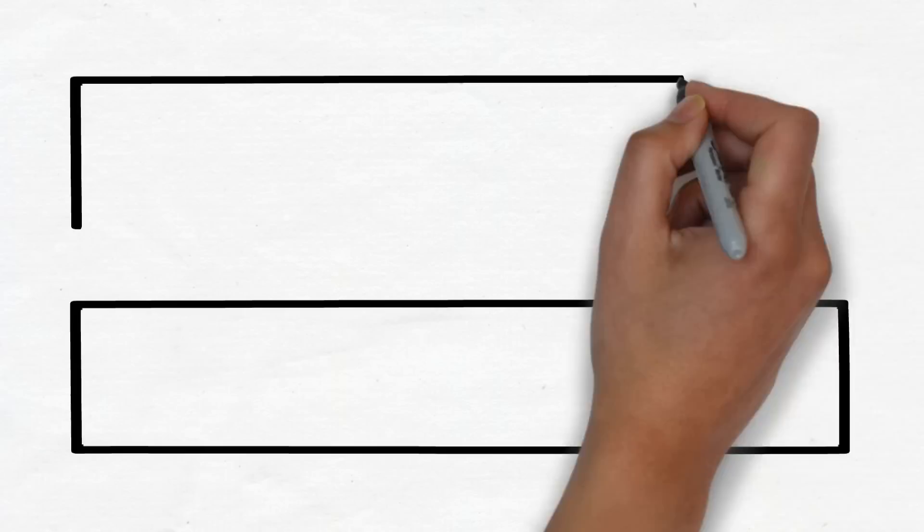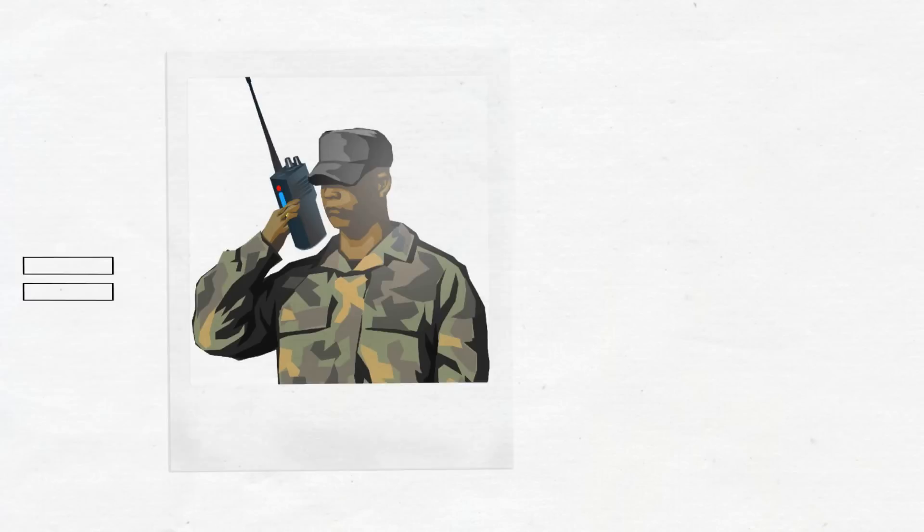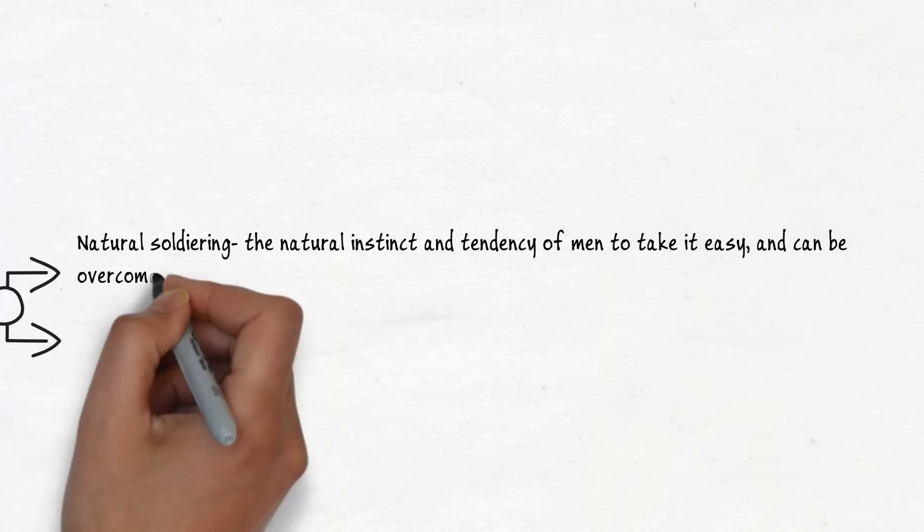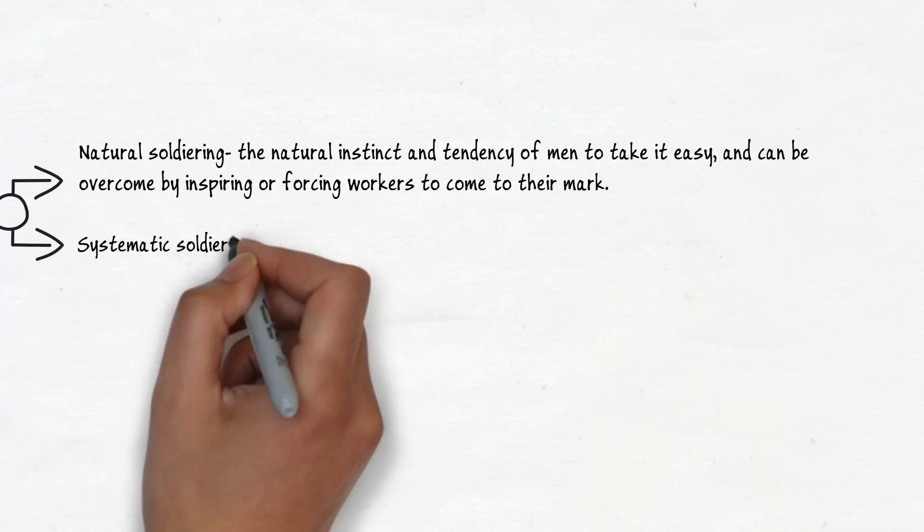According to the evolution of management thought, at Midvale Steel he discovered two types of soldiering. Natural soldiering, which is the natural instinct and tendency of men to take it easy, can be overcome by inspiring or forcing workers to come to their mark. Systematic soldiering, which comes from workers' more intricate thought and reasoning caused by their relations with other men.